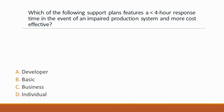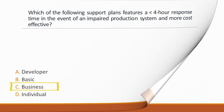Next question: Which of the following support plans features a less than 4-hour response time in the event of an impaired production system and is more cost-effective? Both business and enterprise support levels offer a less than 4-hour response time. Developer offers less than 12-hour response time for system impairment. Basic does not offer any support for system impairment.